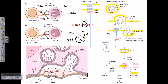The NK cell expresses an activating receptor (AR) and CD94, which binds to class 1 MHC. When interacting with a healthy cell, both the AR–AR ligand interaction and the CD94–MHC class 1 interaction are positive. Since healthy cells express MHC 1 molecules, both signals are received, everything appears normal, and the NK cell simply moves on without harming the cell.